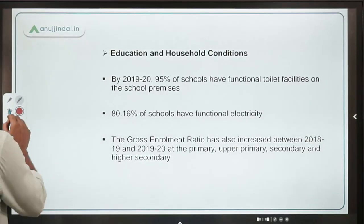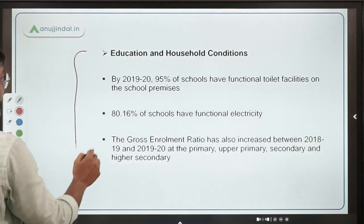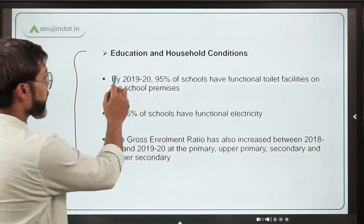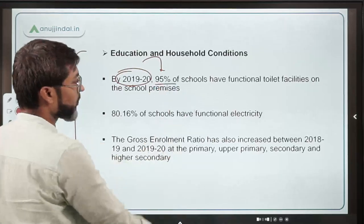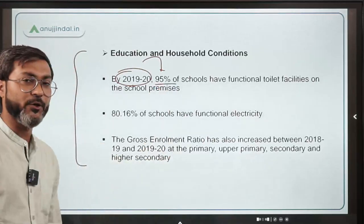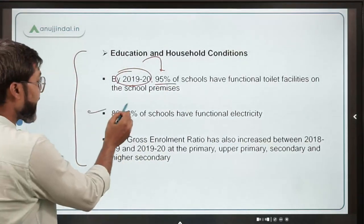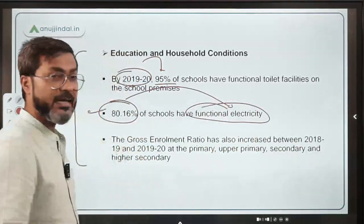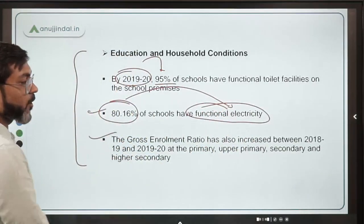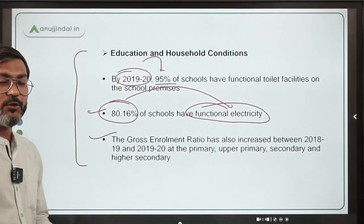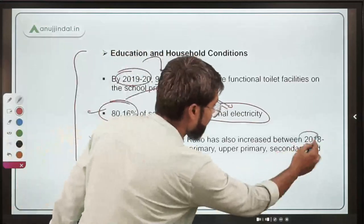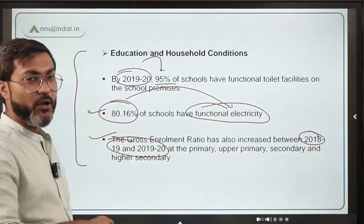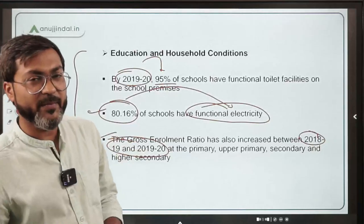Talking about education and household conditions: by 2019-20, 95% of schools have functional toilet facilities and 80.16% of schools have functional electricity. The gross enrollment ratio has also increased between 2018 and 2019-20 at all levels — primary, upper primary, secondary, and senior secondary.